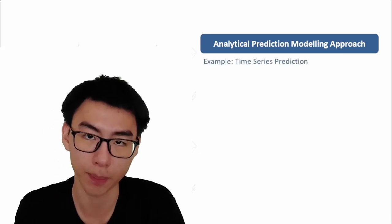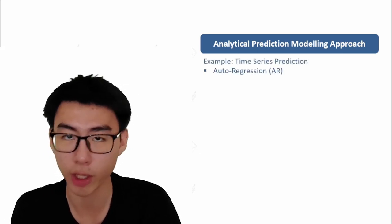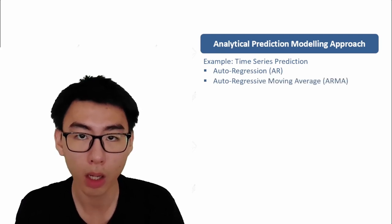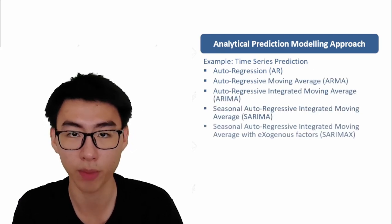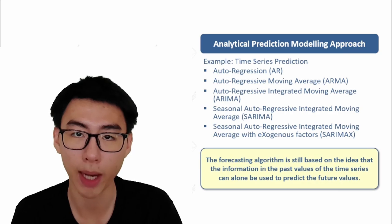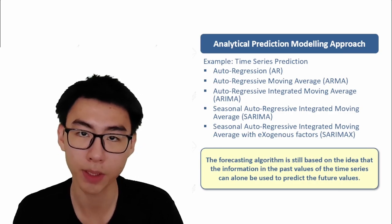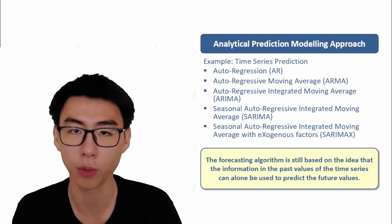Take time series prediction for example. It evolves from auto regression as a base model to ARMA, ARIMA, SARIMA, and SARIMAX, which are all based on the same idea that past values of a time series can alone be used to predict future values.